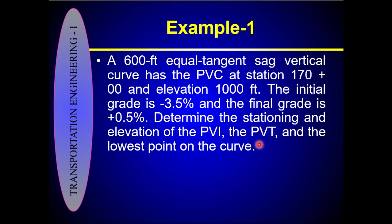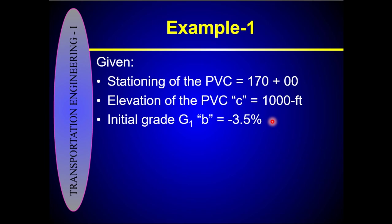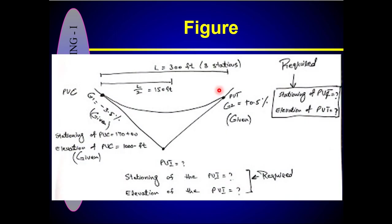Determine the stationing and elevations of the PVI, PVT, and the lowest point on the curve. You have to calculate six parameters: three stationings and three elevations. PVI means Point of Vertical Intersection, PVT means Point of Vertical Tangent, and PVC means Point of Vertical Curve. The initial grade G1, final grade G2, stationing of PVC, and elevation of PVC (denoted by C) are already given.